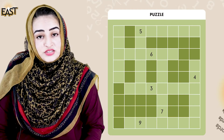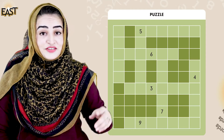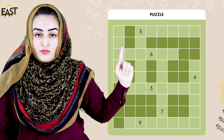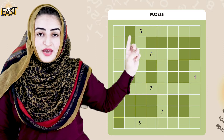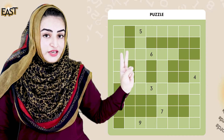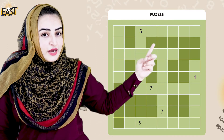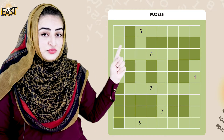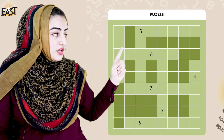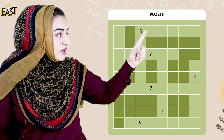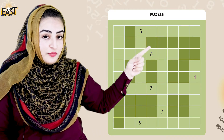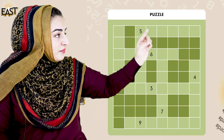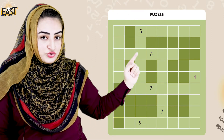Let's move on to page 16 — the puzzle. It is very interesting. Can you see this? We have two colors in it. Some are light and some are dark. The dark side — we do not need to fill the dark portion. We just have to write our numbers in the lighter portion.